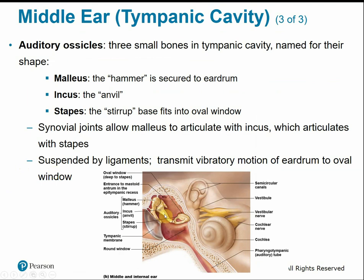The auditory ossicles are the three small bones within the tympanic cavity, named for their shape: the malleus (hammer), the incus (anvil), and the stapes (stirrup). These are composed of synovial joints — freely moving joint cavity joints — that allow the bones to vibrate and transmit vibratory motion and energy from the eardrum to the sensory nerves.